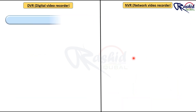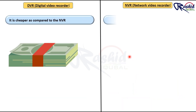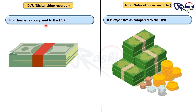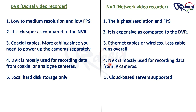Finally, both systems are reliable in recording video data. Although in the past the video quality of DVR systems lagged behind NVR systems, today the gap is being closed. The difference between DVR and NVR systems comes down to cost, how data is transmitted, and the type of cameras. NVR systems tend to have much better picture quality, easier installation, increased flexibility, and native support for audio on cameras that have a microphone.